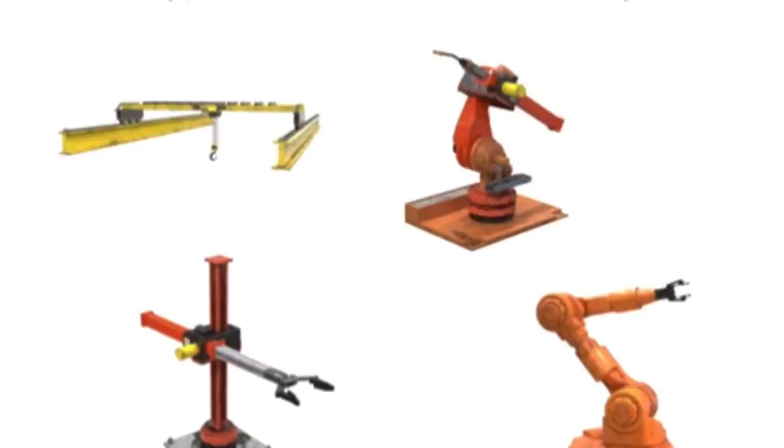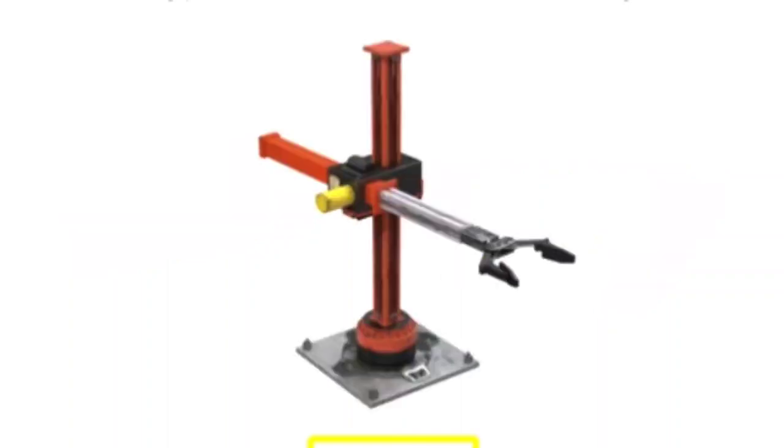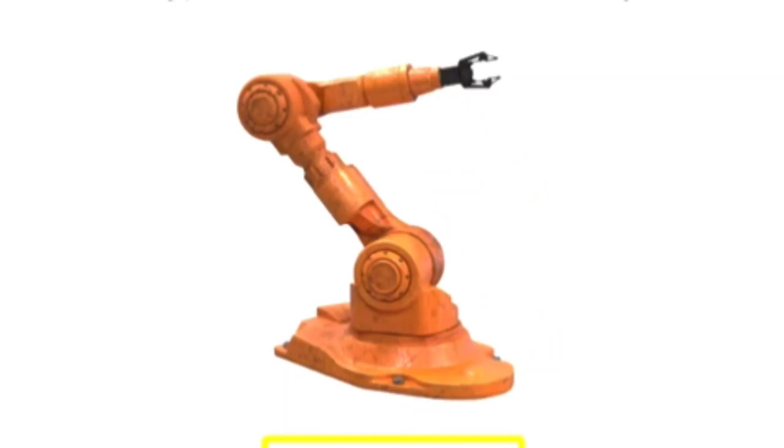There are four main types of robotic arm geometry: rectangular, cylindrical, spherical, and jointed spherical.